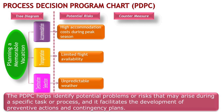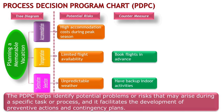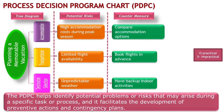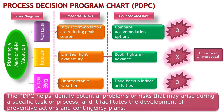To counter these risks, we take specific actions. For unpredictable weather, we may research the climate of the destination and plan alternative indoor activities. To address limited flight availability, we book flights well in advance to secure desired dates and times. For high accommodation costs during peak season, we can compare prices, explore alternative lodging options, and potentially adjust travel dates. By using the PDPC, we evaluate each risk and determine the practicality of the countermeasure, using O to indicate practical solutions and X to represent untractable ones.